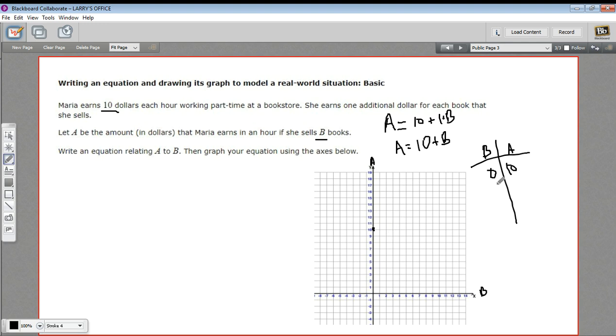And then if she sells one book, that's 10 plus one or 11. Two books is 10 plus two or 12. Three books, 10 plus three, 13. Four books, 10 plus four, 14.